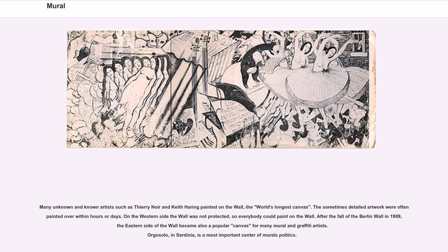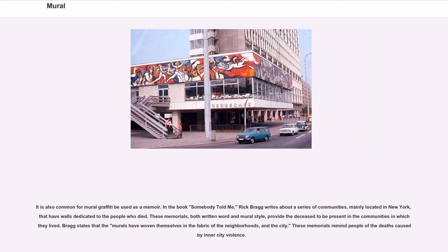The sometimes detailed artwork were often painted over within hours or days. On the Western side the wall was not protected, so everybody could paint on it. After the fall of the Berlin Wall in 1989, the Eastern side also became a popular canvas for many mural and graffiti artists. Orgosolo, in Sardinia, is a most important center of political murals.